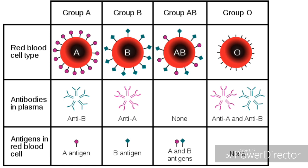This particular table reveals the type of red blood cells, the type of antibodies, and the type of antigens in the four blood groups: A, B, AB, and O. Antigens and antibodies are chemically proteins.